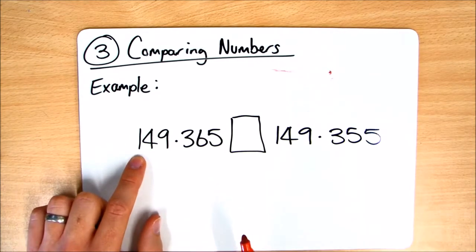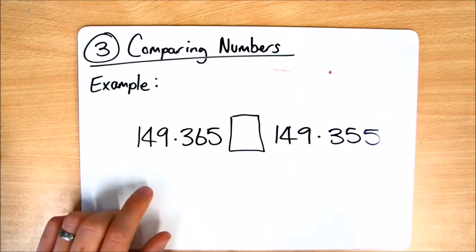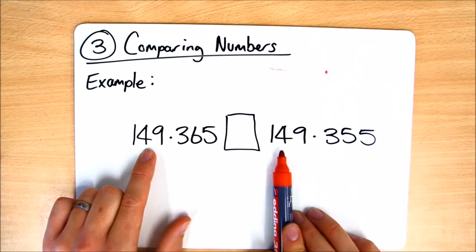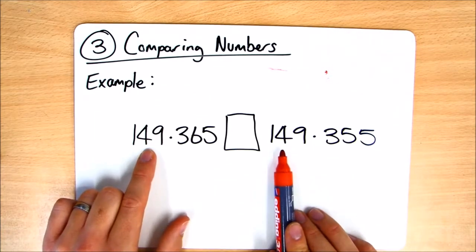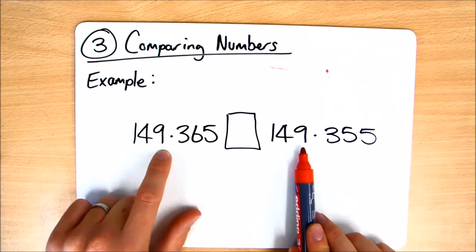The number on the left has one in the hundreds column, and on the right there's one in the hundreds column. The number on the left has four in the tens column, and here there's four in the tens column. So we'll go another column over. There's nine in the units and nine in the units, so still the same so far.